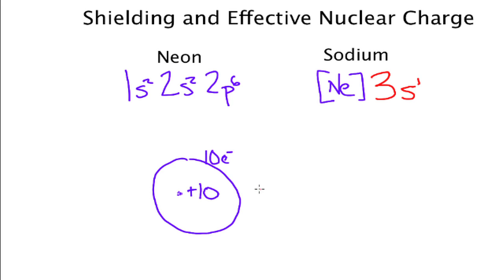So that valence electron is now not in n equals 2 anymore but has to move out to n equals 3. If we draw our picture of sodium now it again has a little nucleus and this nucleus now has plus 11 charge.